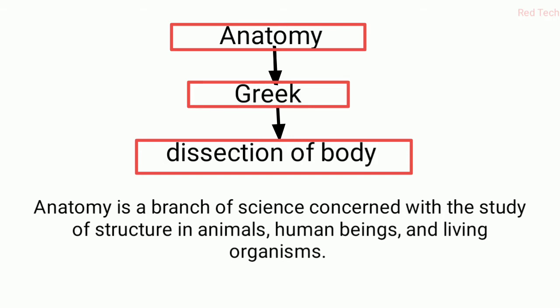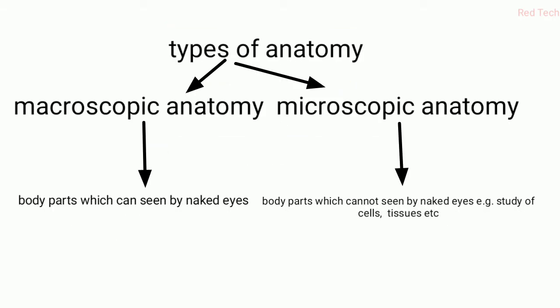Anatomy includes various studies in which structures of different animals, human beings, and living organisms are discussed. There are two types of anatomy: macroscopic anatomy and microscopic anatomy. Macroscopic anatomy consists of body parts which can be seen by the naked eye, such as hands and legs. Microscopic anatomy covers parts which cannot be seen by the naked eye, for example the study of cells or tissues.